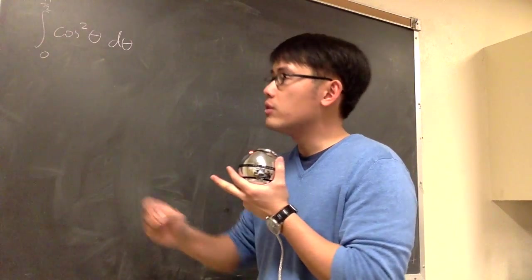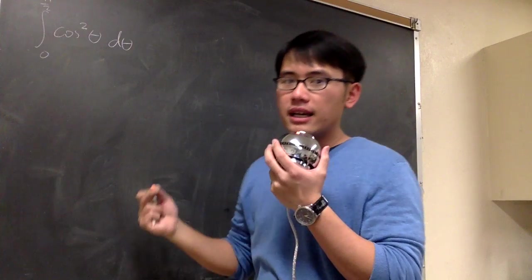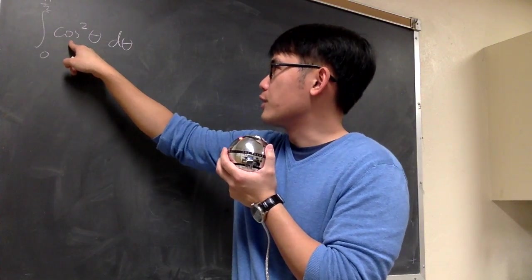We are going to evaluate the integral from 0 to pi over 2 of cosine squared theta d theta. Luckily, we have an identity that will take care of the cosine squared.